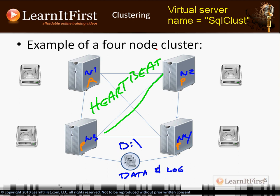One of the jobs of each passive node is to keep tabs on the other nodes in the cluster. Constantly they are asking: 'Hey, are you alive, active node?' The active node has to respond within a certain amount of time. Eventually something goes wrong, the active node doesn't respond, it crashes, and a passive node picks up the slack and becomes the new active node, taking over responsibility to serve the Analysis Services databases.